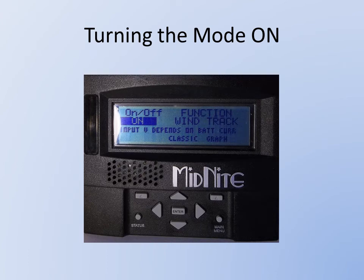Now we've pressed the Main Menu button once to bring us back to the Mode screen where we set the function. This should be set for On underneath On and Off. If this is not set for On, use the up or down arrow to set it to On if Off is highlighted. If Off is not highlighted, use the left or right arrow to scroll to the word Off and highlight it, then use the up and down arrow to switch it to On. After you've switched it to On, you'll need to press Enter, and you'll see data sent and saved on the screen.